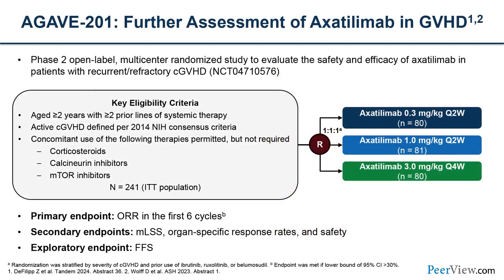AGAVE-201 was a large phase 2, open-label, multicenter study with sites in the U.S. and globally. It enrolled patients with recurrent or refractory chronic GVHD and randomized them to one of three doses of axatilumab: 0.3 mg/kg every two weeks, 1 mg/kg every two weeks, or 3 mg/kg every four weeks. Key eligibility criteria included children or adults who had received at least two prior lines of systemic therapy with active chronic GVHD. Patients could remain on steroids, calcineurin inhibitors, or mTOR inhibitors, but not ruxolitinib or belumosertib. The primary endpoint was overall response rate within the first six cycles.